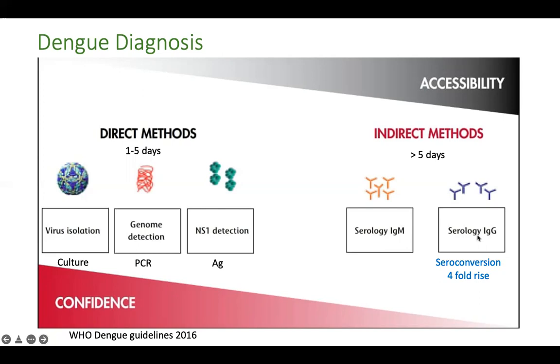After five days, serology is used: IgM by MAC-ELISA is confirmatory. IgG positivity alone may indicate a past infection, but seroconversion — from IgG negative to positive — or a fourfold rise in IgG titer confirms acute current dengue infection. For more on dengue management in an ICU setting, the link is available in the description box.